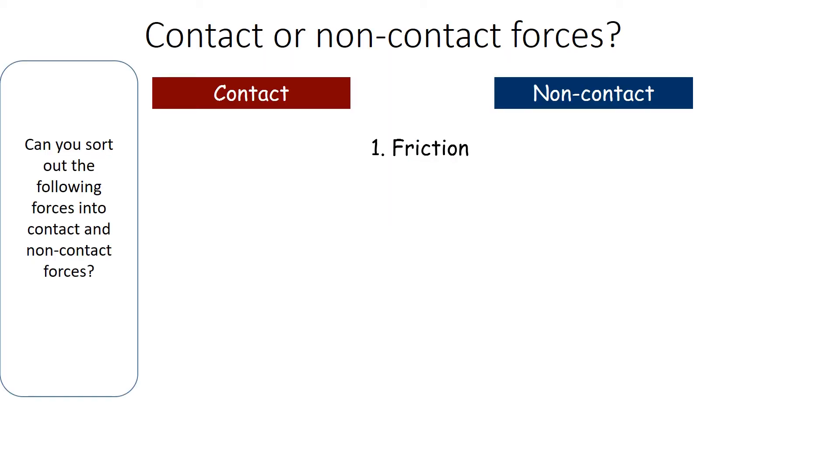So think about this. We're going to go through each one individually and I'm going to give you some information. So friction. Is it contact or non-contact? Copy this table down because we're going to sort these together. Friction goes into the contact because actually friction is when two materials rub against each other. We can reduce friction by using lubrication. We can reduce friction by smoothing the surfaces.